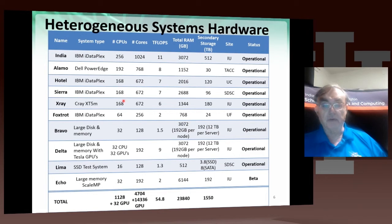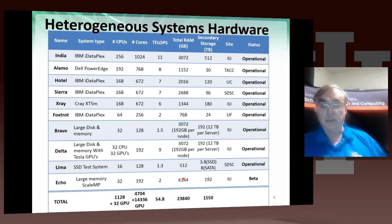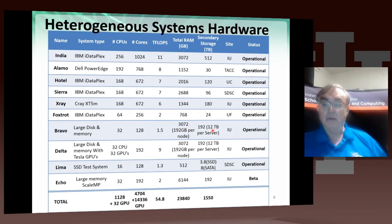Here's the hardware of FutureGrid. There's not very much hardware — just 4,700 cores — with a total performance of around somewhat over 50 teraflops. A lot of our machines have a lot of memory, and many have quite a few disks, up to 12 terabytes per server. That's useful if you want to explore special applications that need lots of memory or cloud-like applications which tend to store data on the same node as the compute. We also have a ScaleMP system, Echo, that is just coming online.